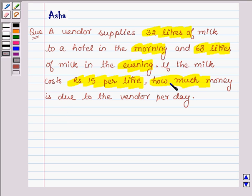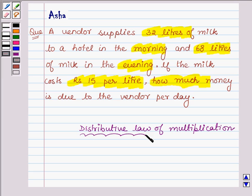So, to find how much money is due to the vendor per day, let us first learn what is distributive law of multiplication with the help of which we will solve this problem. This law says if we have three whole numbers a, b and c, then a×(b+c) is equal to a×b + a×c.